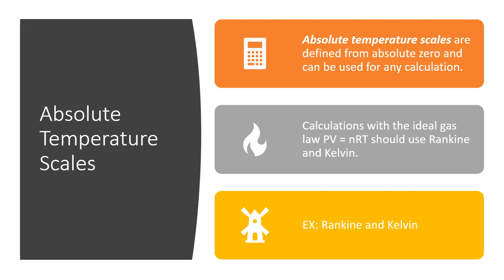Calculations with the ideal gas law, which is PV (pressure times volume) equals nRT (moles times R, which is the gas constant, times T, which is the temperature), should use Rankine and Kelvin. Rankine and Kelvin are both the two examples of absolute temperatures.